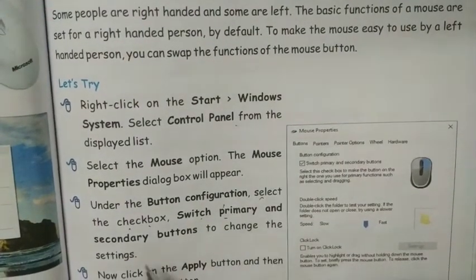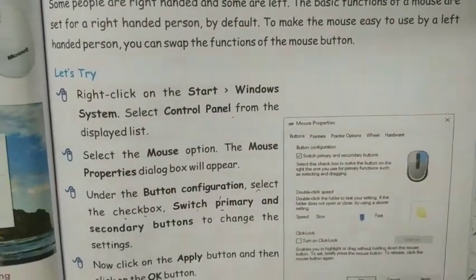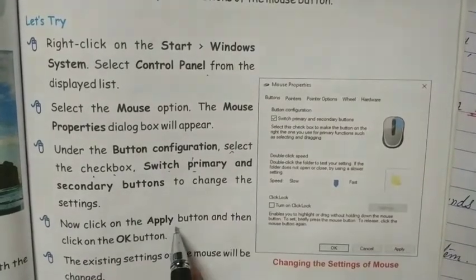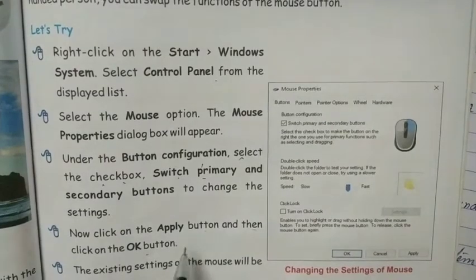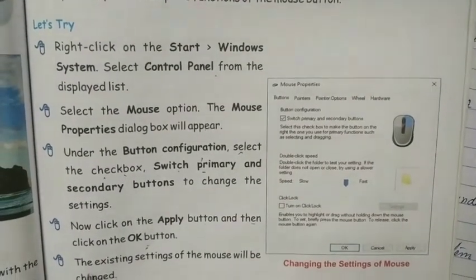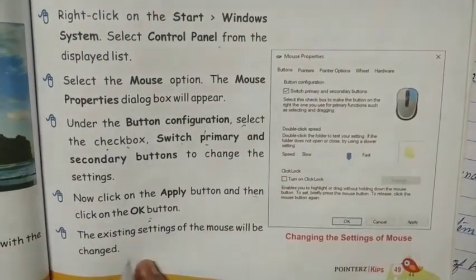To change the settings, now click on the Apply button. After the Apply button, then click on the OK button. The existing settings of a mouse will be changed.